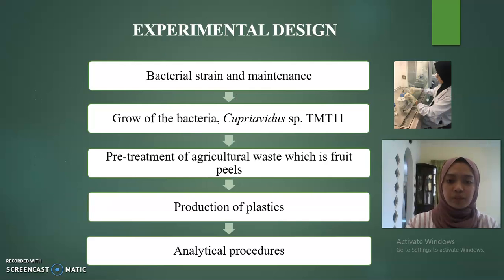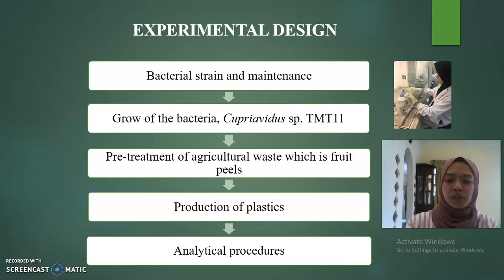For the experimental design: first is bacterial strain and maintenance. The second is to find the growth of bacteria, which is the MT11. The third is to find the pre-treatment of agricultural waste, which is the fruit peels, where it is treated to enzyme hydrolysis using 0.5, 1.0, and 1.5 normality citric acid to determine the best concentration with the highest chemical content. The fourth is production of plastics, and the last is analytical procedures.